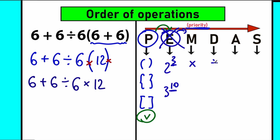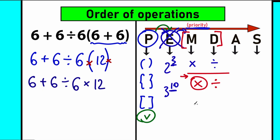The next part after exponents: M stands for multiplication and D stands for division — I treat these as one common group. Multiplication and division are tied in priority. When we have a multiplication-then-division mixture, we perform multiplication first because it's the first sign from left to right. When we have division-then-multiplication, we perform division first. This is the key moment — extremely important. Now let's look at where we have multiplication and division in our expression.